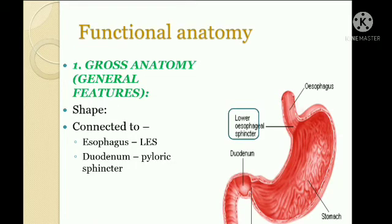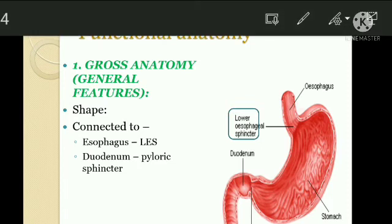Now, functional anatomy of the stomach. The stomach is a J-shaped hollow muscular bag connected to the esophagus at its upper end and to the duodenum at its lower end. Gastric contents are isolated from the rest of the digestive tract proximally by the lower esophageal sphincter and distally by the pyloric sphincter.